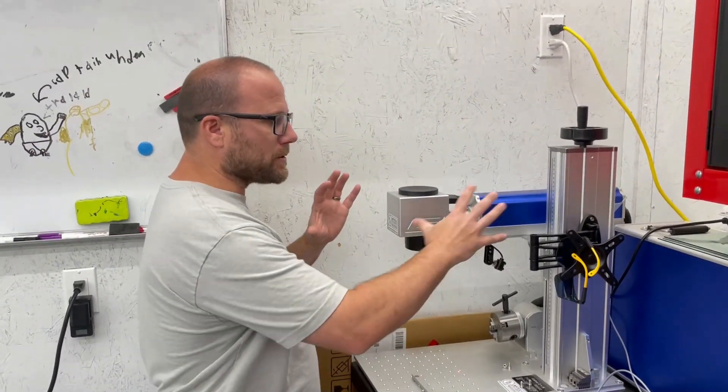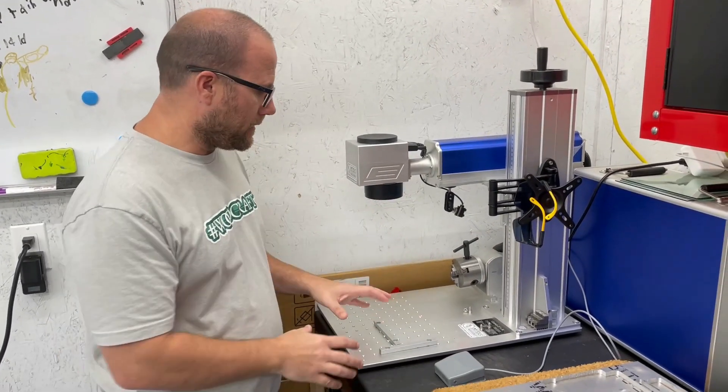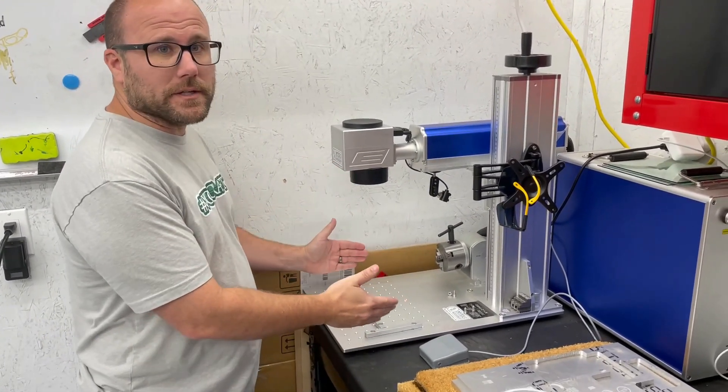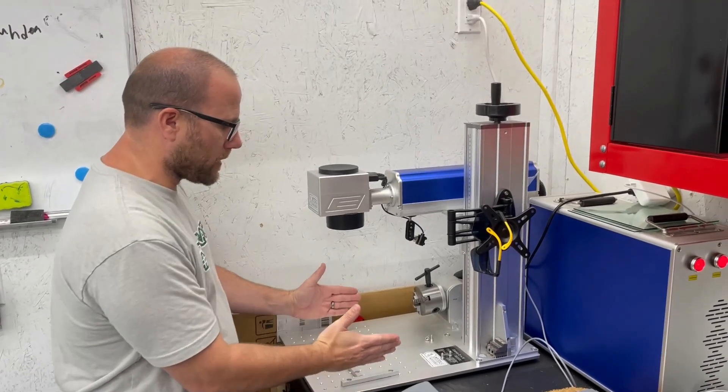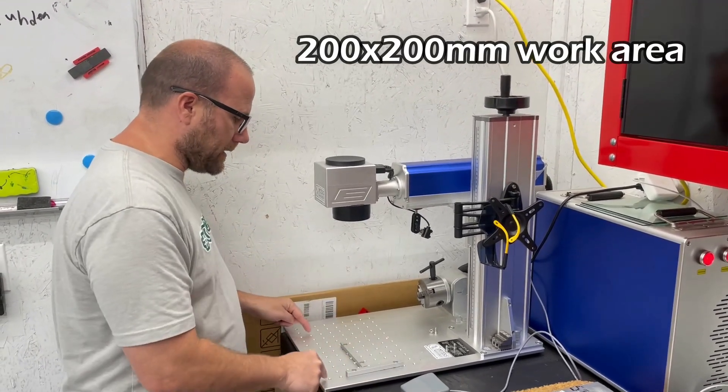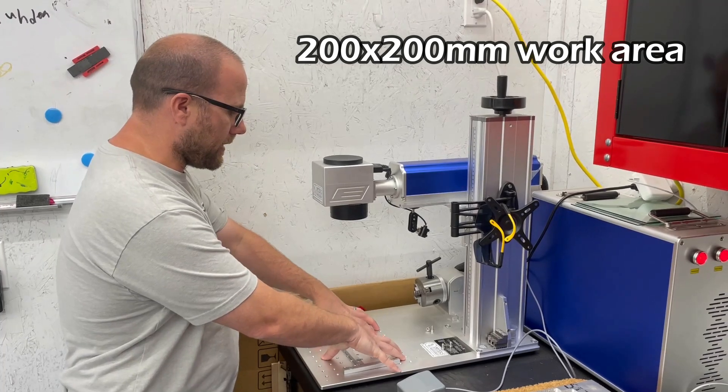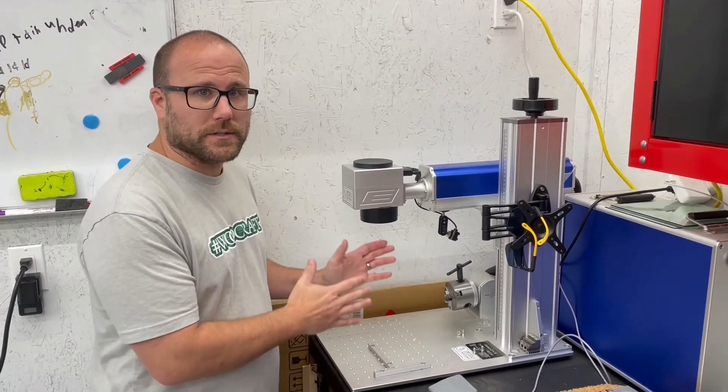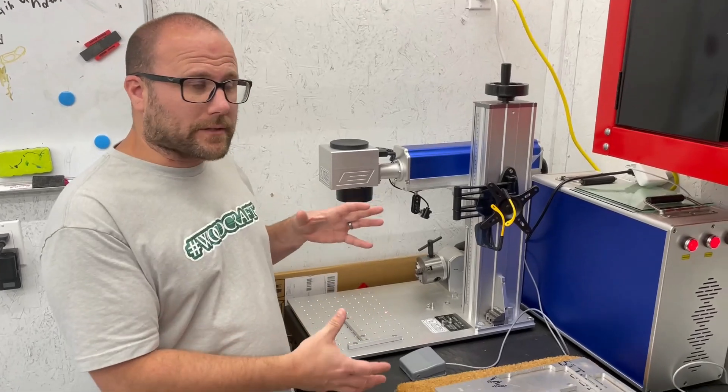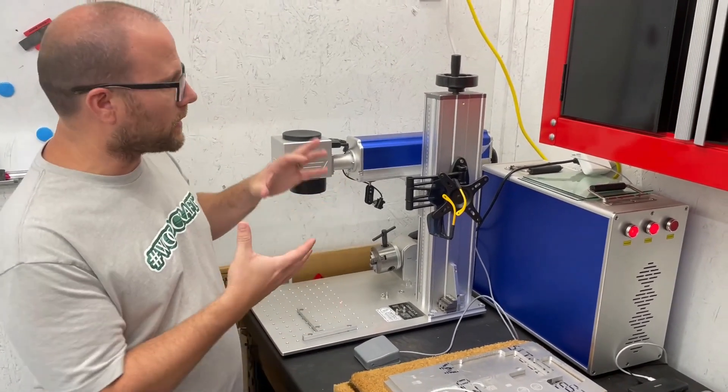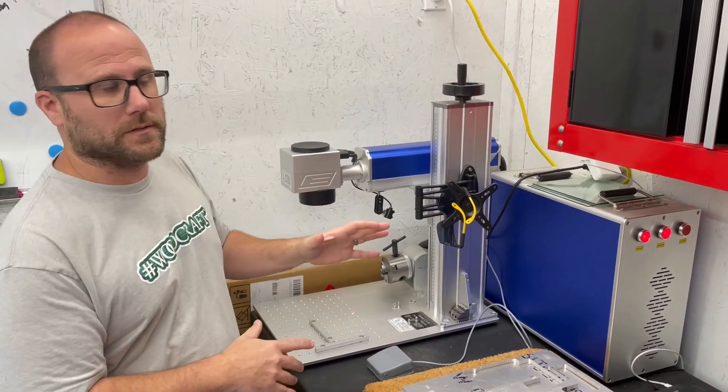You'll notice that this machine is much smaller than my CO2 laser. This machine that I have is a 200 by 200 millimeter workspace. It's basically the threaded inserts area is the workspace that I have for this fiber laser. You'll notice that this physical form factor is smaller and more compact, but a little different. So let me go over the parts of this machine.